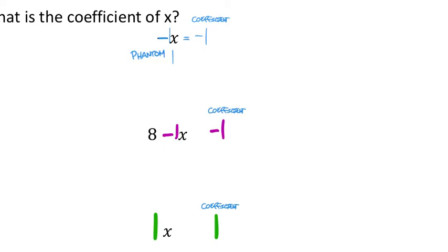Why is it a phantom one? Because anything multiplied by one stays itself — there's actually a times-one here that's just not being shown. In fact there's an infinite number of multiplied-by-ones that just aren't being shown. So whenever you see a letter by itself, you can know there is always a phantom one coefficient there.